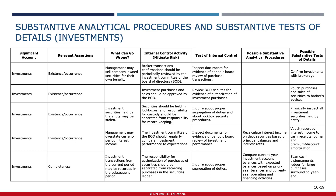In addition to tested controls, auditors perform substantive audit procedures to gather evidence about account balances; the extent of these procedures depends on the auditor's level of reliance on internal controls. Substantive procedures for investment securities include physically inspecting selected investment securities held by the entity, which helps verify their existence and provides evidence about the accuracy of their valuations. Auditors can also obtain confirmations directly from the custodian or broker regarding existence and valuation of the securities, as independent confirmation from external parties adds credibility. Auditors also perform reconciliations of the entity's investment records with external records such as custodian or broker confirmations, ensuring that all investments, including those held by third parties, are appropriately recorded.